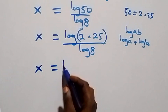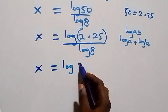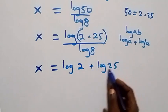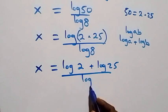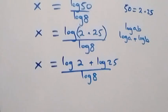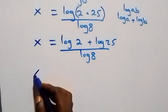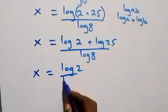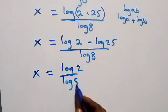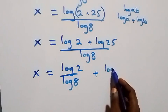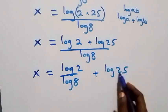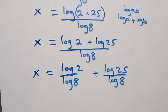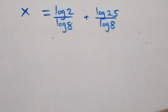That is, here we have x equals to log 2 plus log 25, all over log 8. The next step, we separate this into two fractions and we have x equals to log 2 over log 8, plus log 25 over log 8.